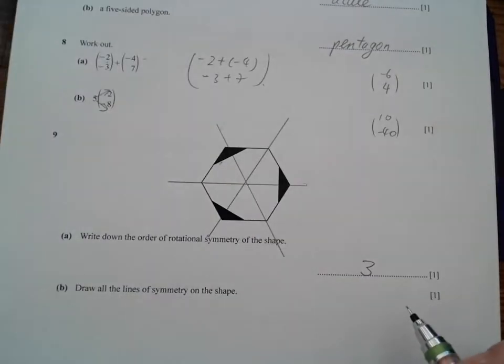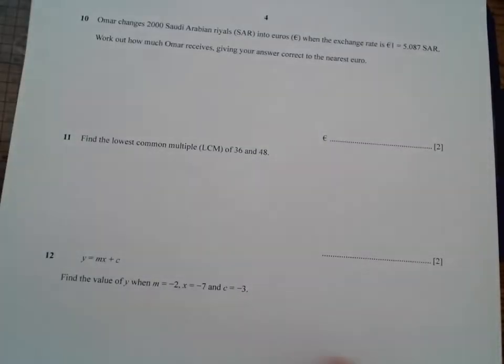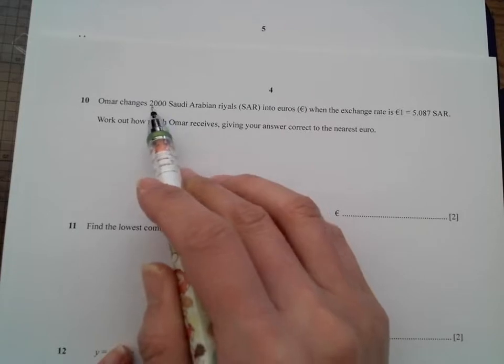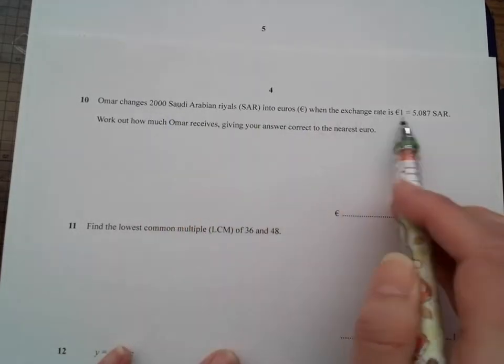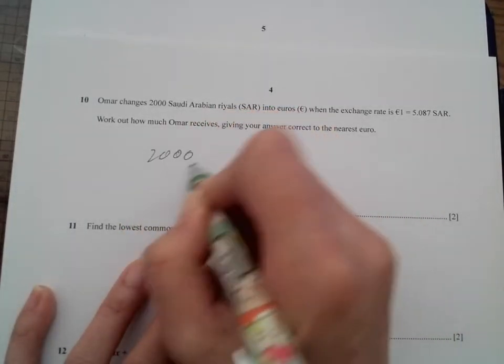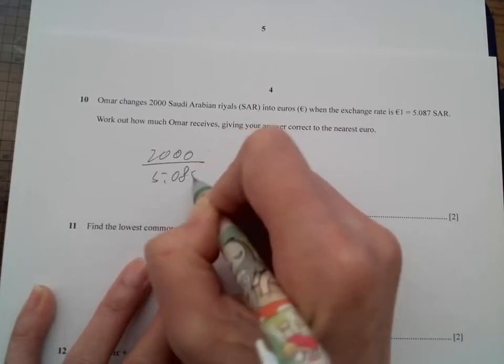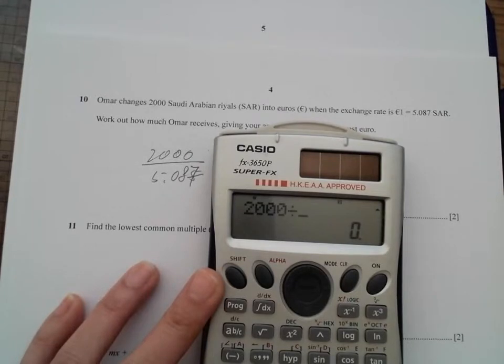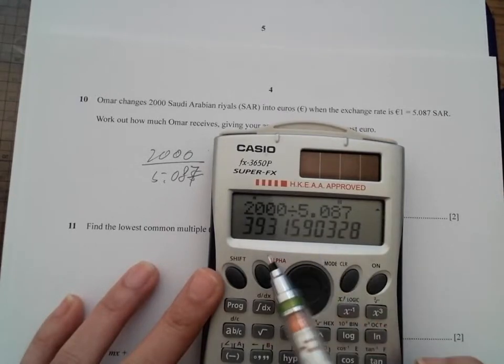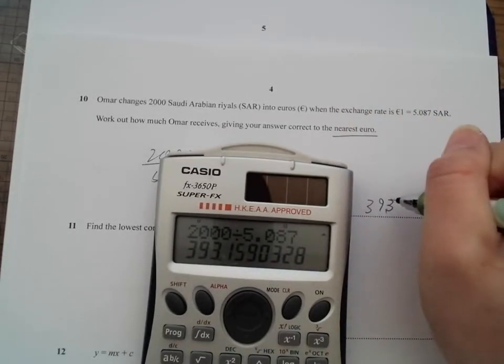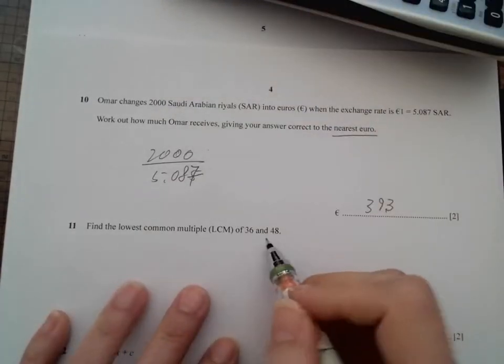Now moving on, Abraham changed $2,000 from Saudi Arabia to euros, and he changed rate. So how much did you receive? So we have $2,000 divided by 5.087. Use our calculator, so it's $393 as the answer.